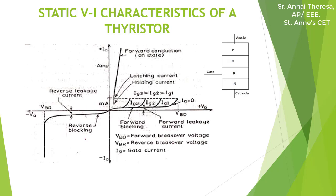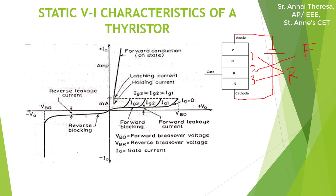First, let's see the reverse blocking mode. In this mode, the anode is connected to the negative terminal and cathode is connected to the positive terminal. The gate is left open. Under this condition, junctions J1 and J3 are reverse biased, and junction J2 is forward biased.